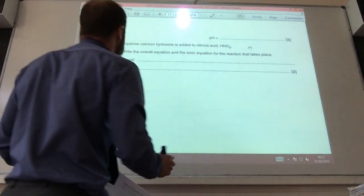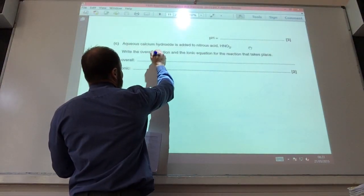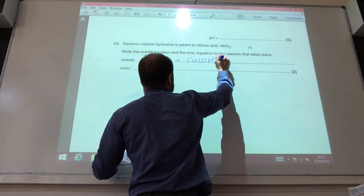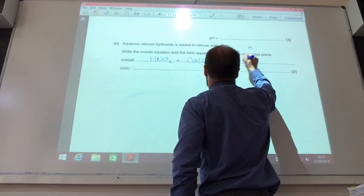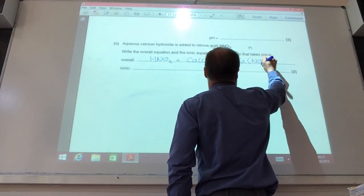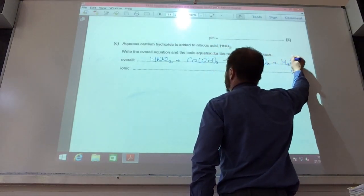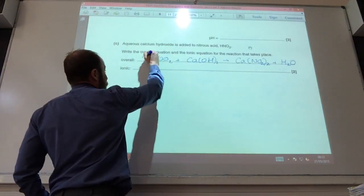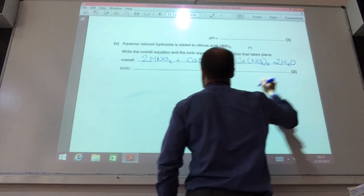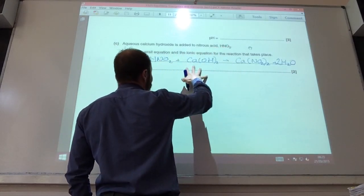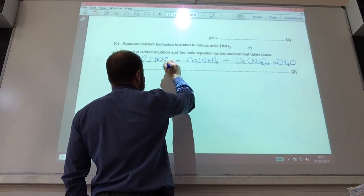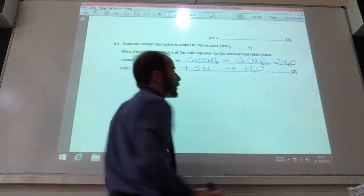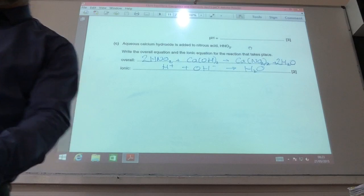A nice little equation to finish with. I've got nitrous acid reacting with calcium hydroxide. It's an acid and a base. It's going to give you a salt plus water, like so. You're going to need two of those and you'll make two waters. It's a neutralization reaction between an acid and an alkali to give you water. That, therefore, is your ionic equation.